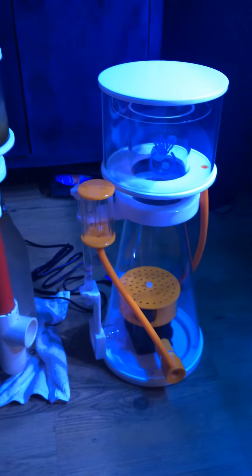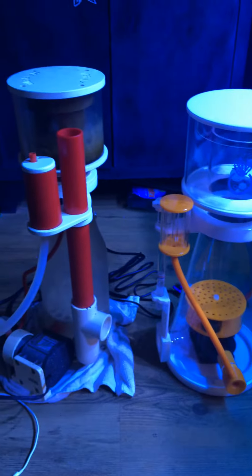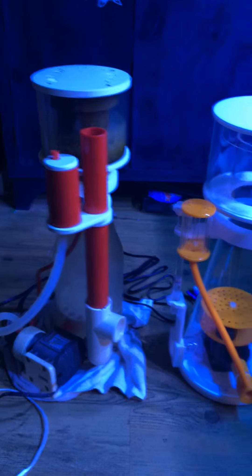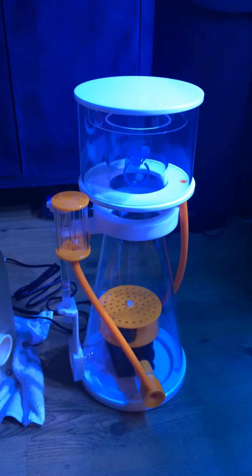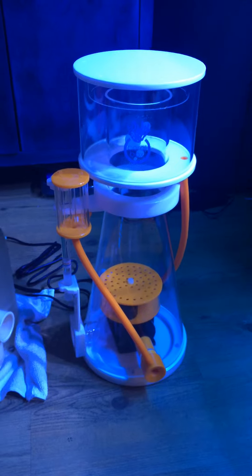Price-wise, the Coral Box was quite a bit cheaper than the Vertex Omega I bought in the past. The collection cup is quite a bit bigger as well, and it's got a nice cone shape to it.